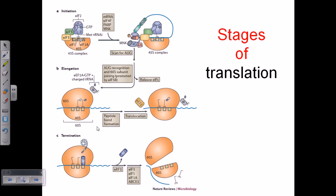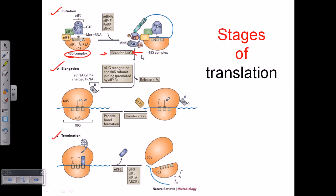Looking at the different stages of translation in eukaryotes, we start with initiation, elongation, and termination. The initiation phase can be divided further into smaller parts: first, the assembly of factors with the 40S subunit to produce the 43S complex; second, the attachment of mRNA to the 43S complex; third, scanning through the mRNA to find the start codon AUG; and finally, attachment of the large 60S ribosomal subunit to form the actual translation complex.